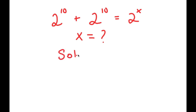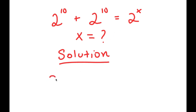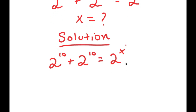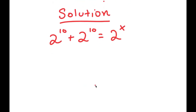For my solution, I'm going to first start by rewriting my equation: 2 to the power of 10 plus 2 to the power of 10 is equal to 2 to the power of x. Now, to solve this, what I'm going to do is first factor out 2 to the power of 10 from my left-hand side.